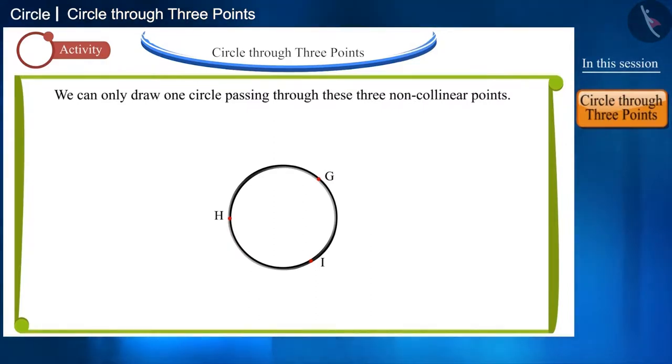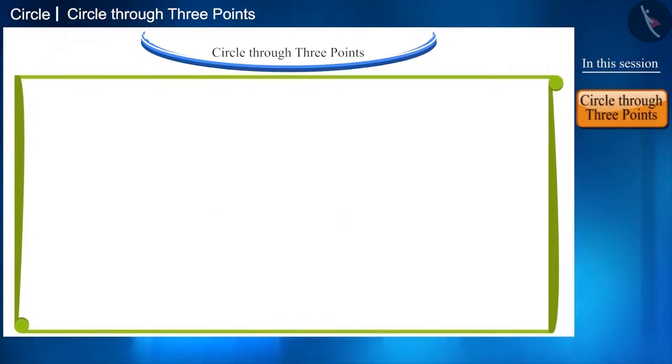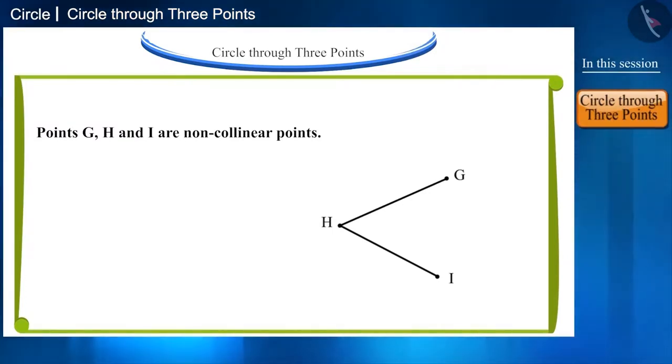Let us see the mathematical proof for this. First, let's join G, H and H, I this way. And draw perpendicular bisectors of G, H and H, I, that is P, Q and R, S respectively, which intersect each other at point O.